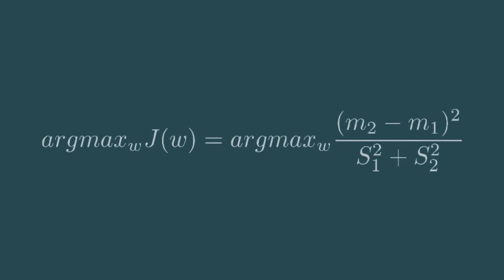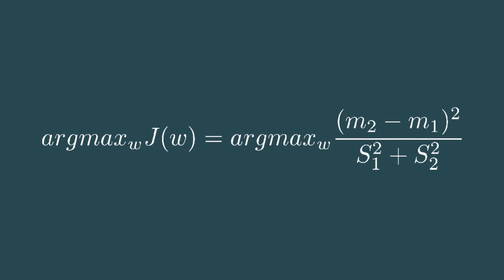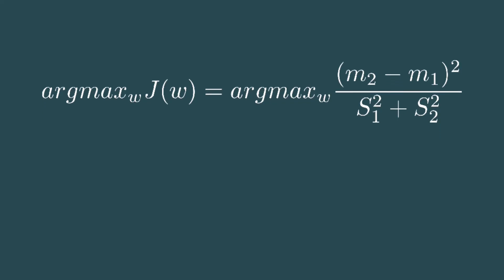To get the parameters of a linear function v and b, we can maximize something called the Fischer criterion. It is equal to the squared difference between the means of the classes divided by the covariance matrix of class 1 plus the covariance matrix of class 2.